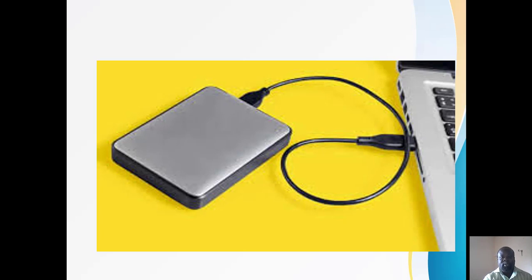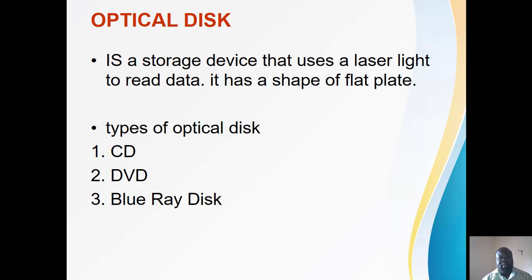Now, the optical disc is a storage device that uses laser light to read data. It has the shape of a flat panel plate — a round, flat disc which uses laser light to read data. When it is inserted into the computer through a ROM, the data is read onto the CD in the form of light so that data can be copied. We have three types of optical discs: CD, DVD, and Blu-ray.